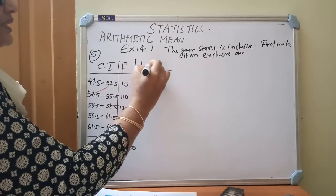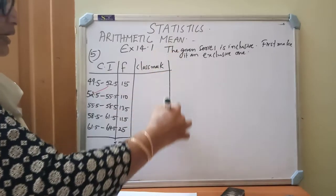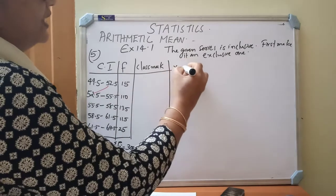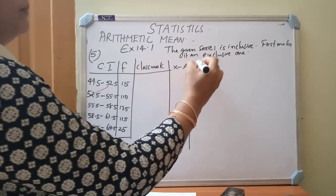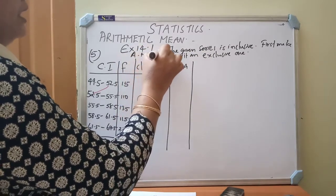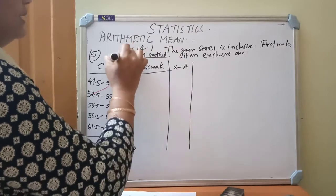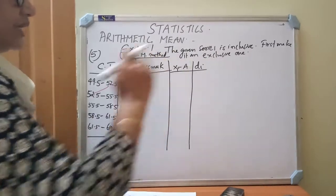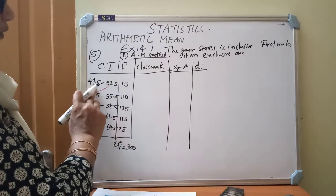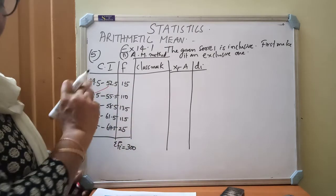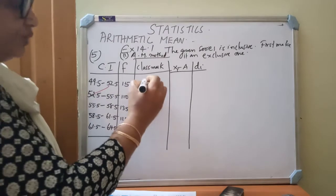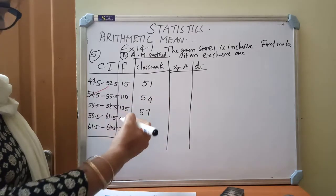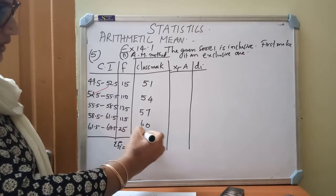Then class mark. Next is class mark. After class mark only, in assumed mean method, we can do as x minus a. This is assumed mean method, method 2. So xi minus a and di will come. Class mark: 49.5 plus 52.5 whole divided by 2. You will get this as 51, 54, 57, then 60, 63.